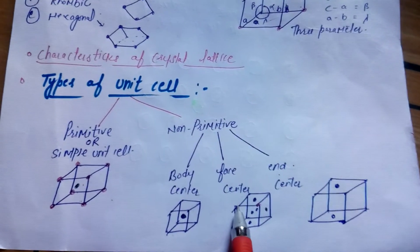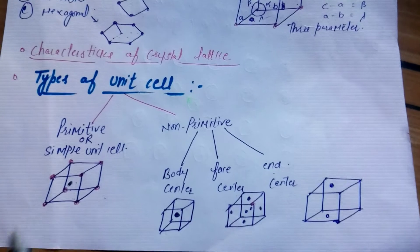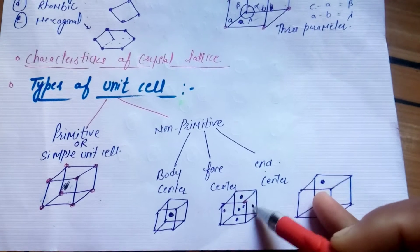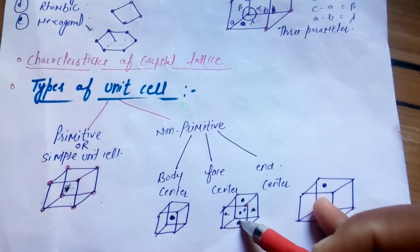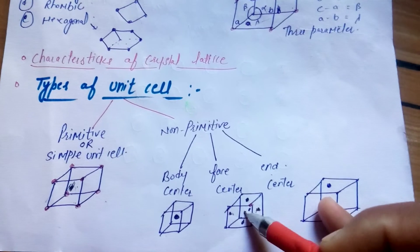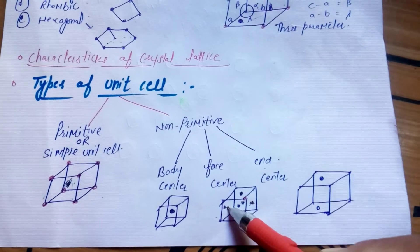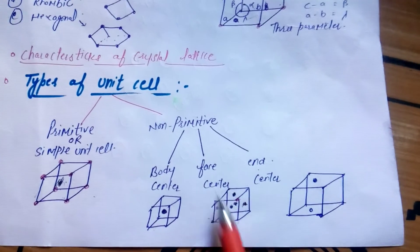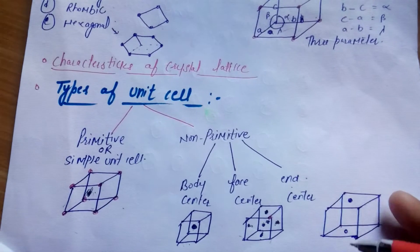Next is the face center unit cell. Face center, as the name indicates, means an atom molecule is present at the center of each face. This includes the front part, back part, left side, right side, and all other faces of the unit cell.